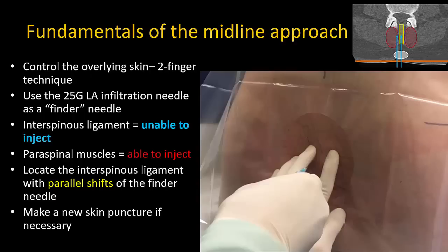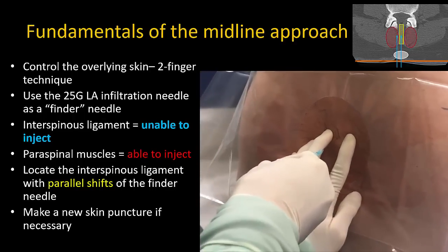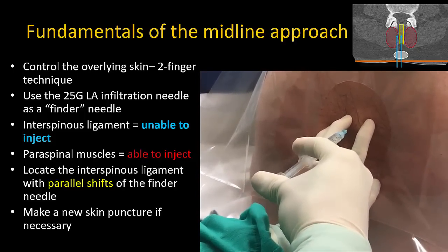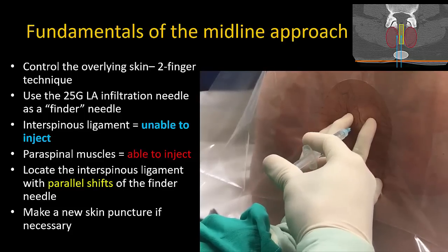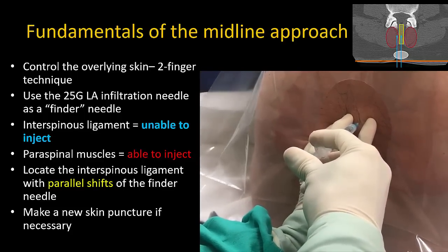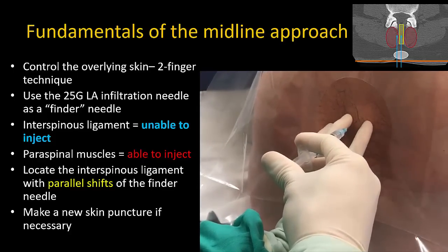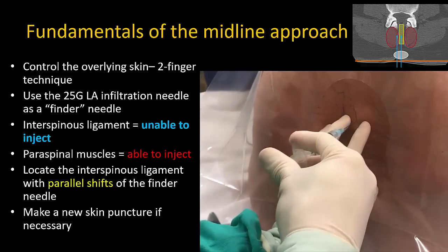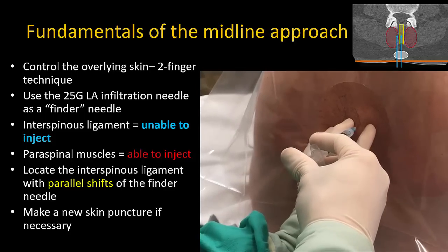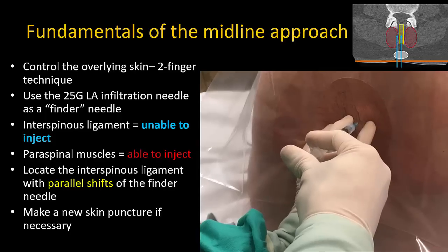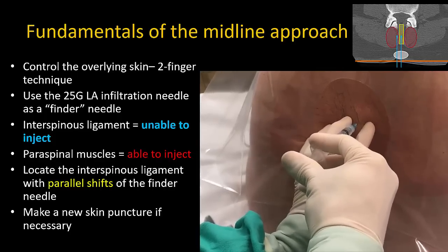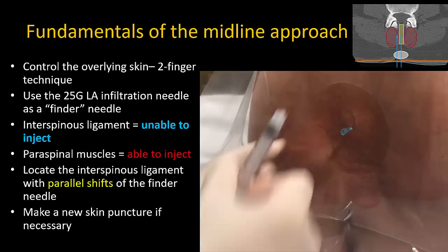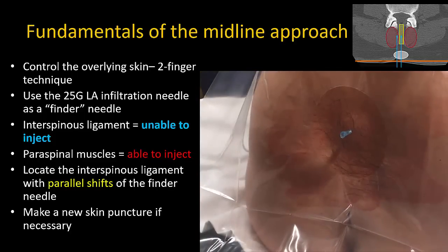This video illustrates all of the above steps. Fix the skin between two fingers placed on either side of the interspinous ligament and insert the infiltration needle. Inject local anesthetic to anesthetize the skin and subcutaneous tissues, then advance the needle deeper and perform test injections to locate the interspinous ligament and midline. Here I am able to inject, signifying that I am in muscle and not the midline. I withdraw the needle to skin, drag the skin to make a slight parallel shift, and reinsert and re-inject — repeating left and right until I find absolute resistance to injection. The needle is now anchored in the interspinous ligament and I leave it in place as a guide for subsequent insertion of the introducer or spinal needle.